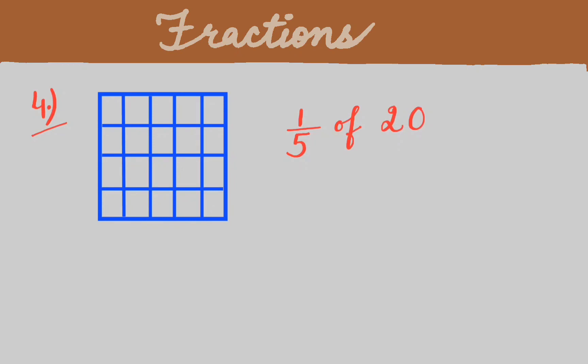Next question: 1 over 5 of 20. 'Of' means multiplication. We have to shade 1 over 5 parts of these total 20 parts. So 1 over 5 of 20 means 1 over 5 multiply by 20. Then 5 fours are 20, so we get 1 into 4 is 4. We have to shade 4 parts out of 20.